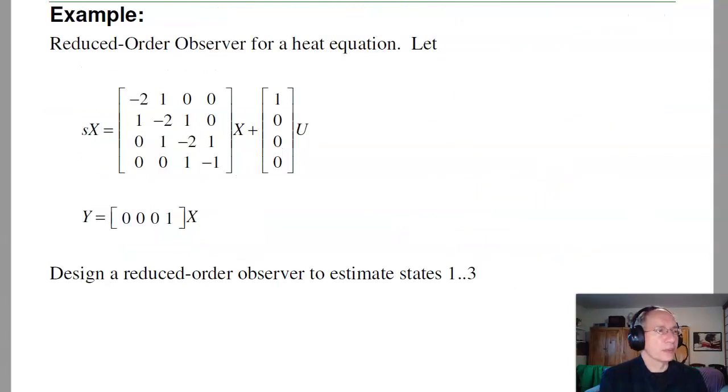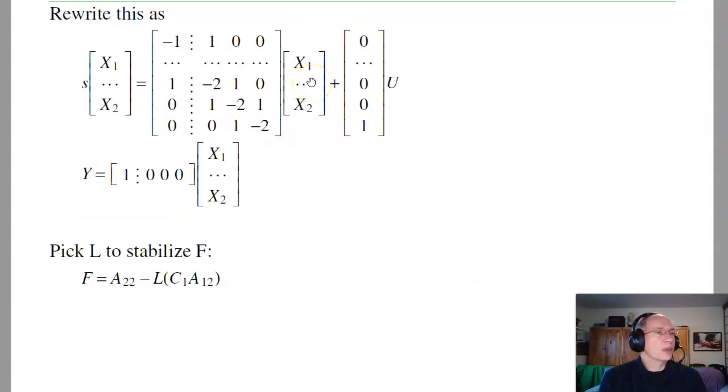So let's go through an example. Suppose I've got everyone's favorite, the heat equation, four-stage RC filter, where I'm measuring the fourth state. Since I'm measuring the fourth state, I don't have to estimate it. I'll just estimate the other three states. So what I do is I first rewrite the system. The state that I measure goes first. The other states go second. So I took the previous system, rearranged it as follows. My B matrix says here's B1, there's B2. My C matrix, here's C1 and 0. So my estimate of x1 is just y. y equals x1. I'll now pick L to stabilize this matrix.